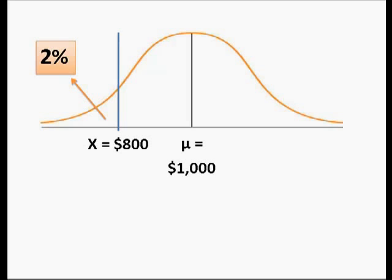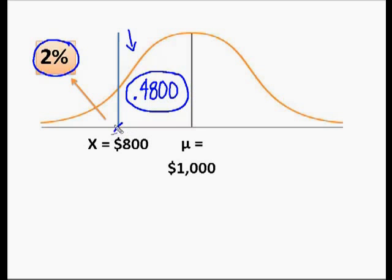So remember I told you that the second step of my process is to locate the area under the curve. If I know that 2% falls here, I know that this entire side of the curve here is 50%. So when I subtract 50% minus 2%, I get 0.4800. So I now know that I'm looking for the z-score associated with 48% of the data falling between my value of X, 800, and my mean of 1,000.